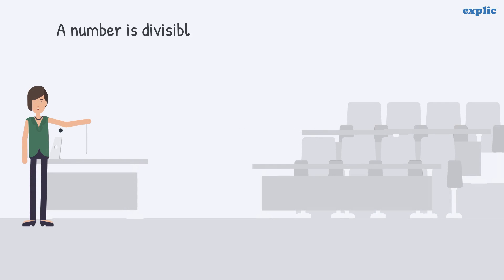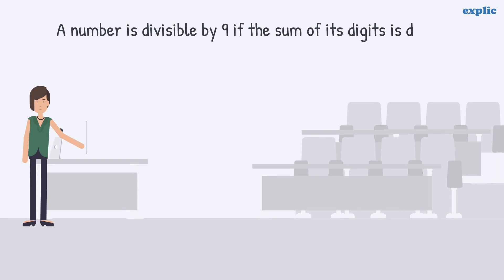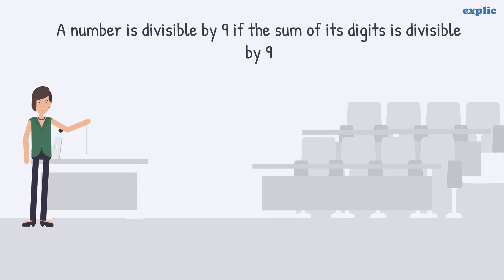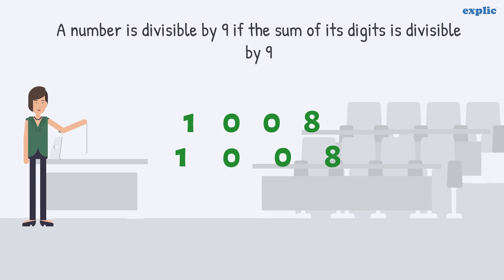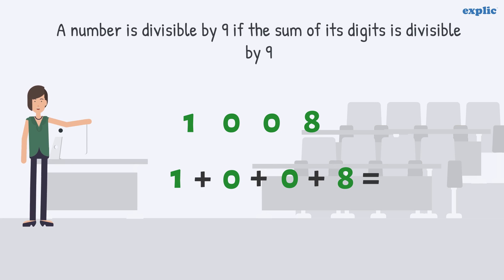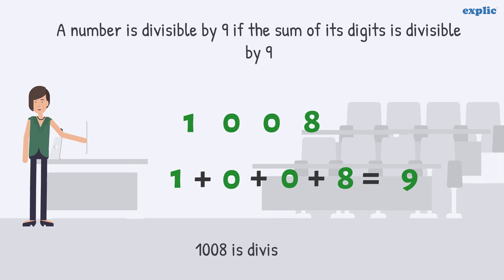A number is divisible by 9 if the sum of its digits is divisible by 9. For example, in number 1008, the sum of digits is 9, which is divisible by 9. Hence, 1008 will be divisible by 9.